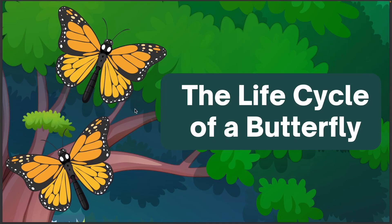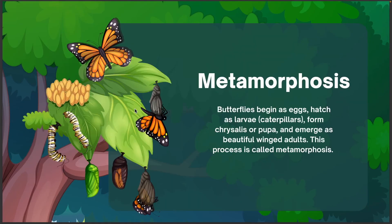The Life Cycle of a Butterfly. Metamorphosis. Butterflies begin as eggs, hatch as larvae, form a chrysalis or pupa, and emerge as beautiful winged adults. This process is called metamorphosis.